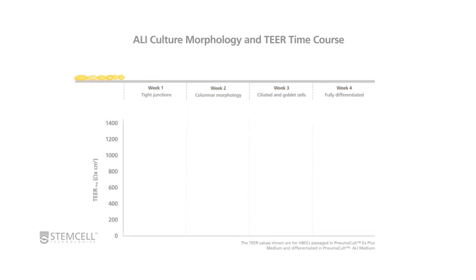At week 1 post-ALI, the cells will become tightly packed and bound by tight junctions, creating a high barrier function. Subsequently, TEER values will peak.